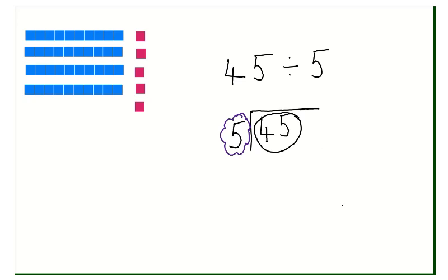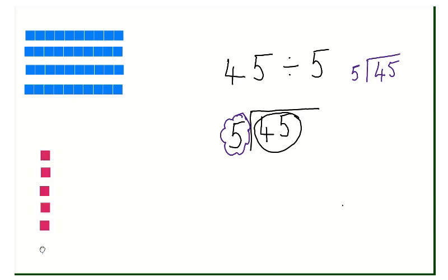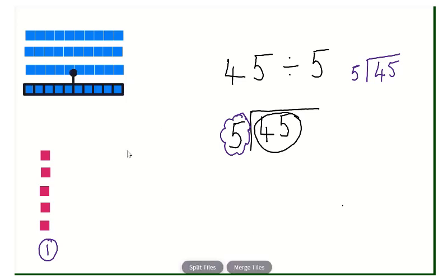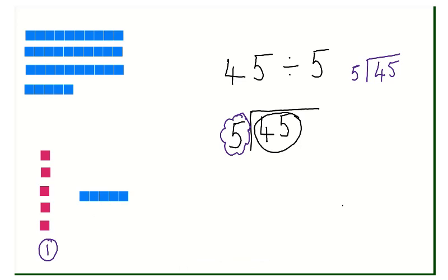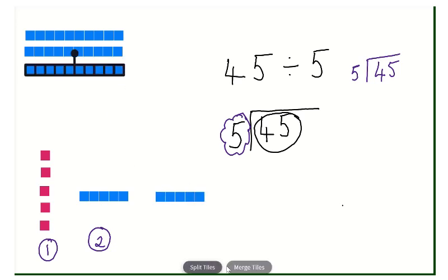So if we've got 45 divided into 5, we're going to divide it with five things in each group, because I want to count in fives to see how many fives go into 45. So I've got five there — that's one group of five. Then if I had another group of five it would make two, that would be my second group of five, which would be ten altogether.